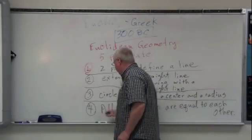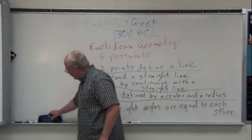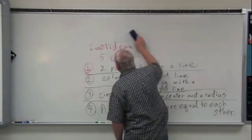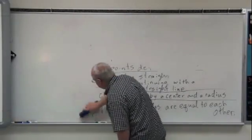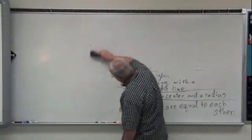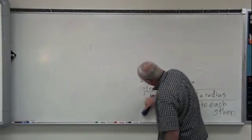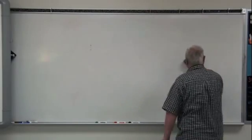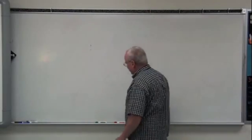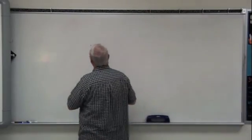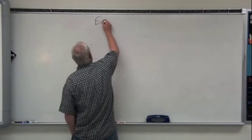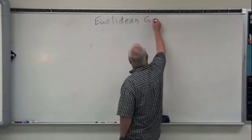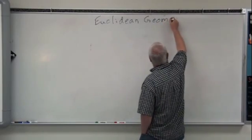We're going to start over with the fifth one because it's very important. Remember Euclid — about 300 B.C., he wrote a book called Euclid's Elements, and in it he described what we now call Euclidean geometry, which is what we're going to be studying this year.